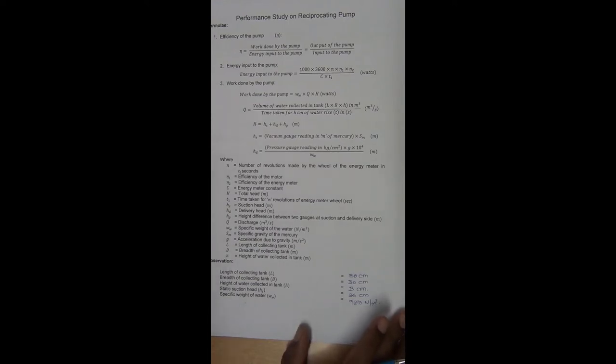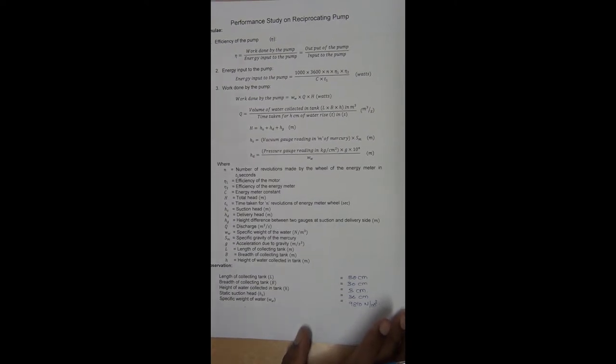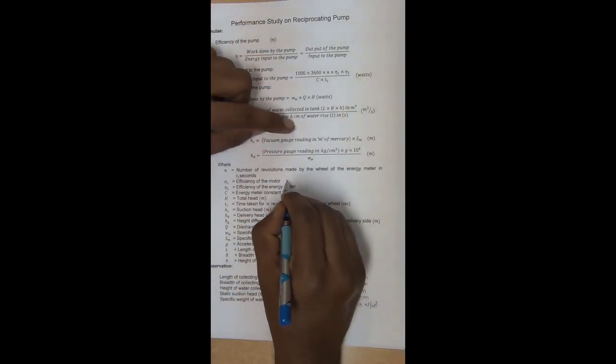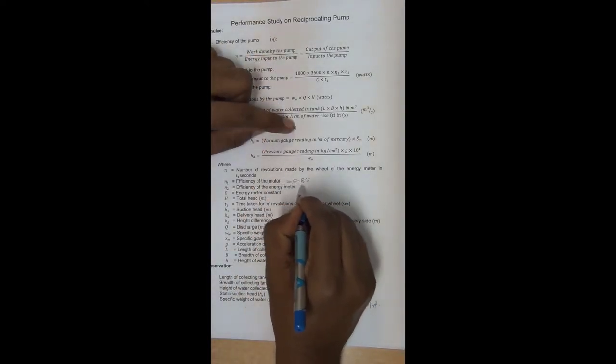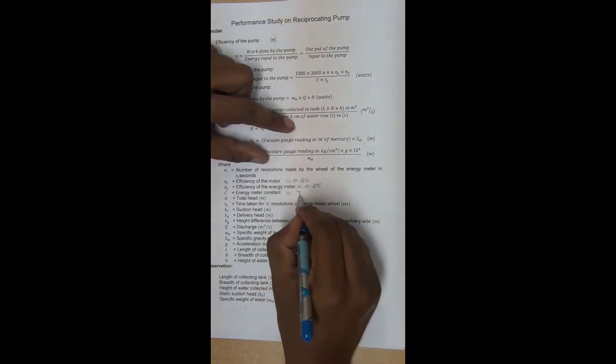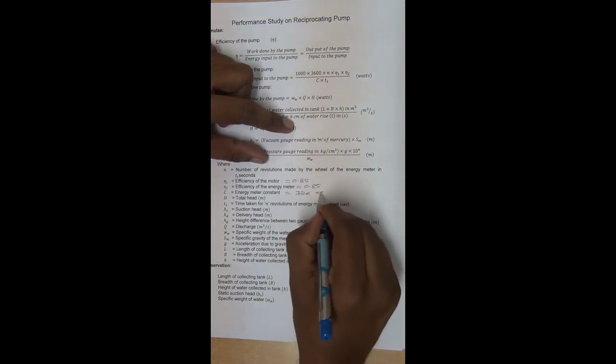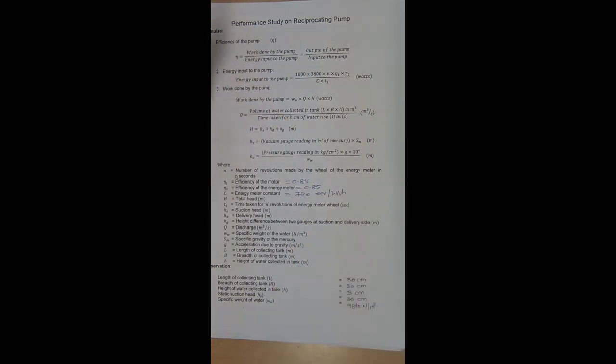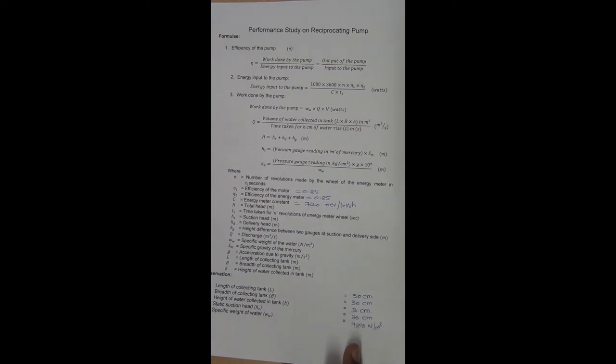So these are the observations for the reciprocating pump. Similar to the previous pumps, efficiency of the motor is 0.85, efficiency of the energy meter is 0.85, energy meter constant is 720 rpm per kilowatt hour. So these are the observations we should know before we go for the reciprocating pump experiments. Now let me give one reading and we will explain the model calculation for that reading.